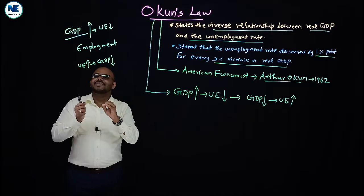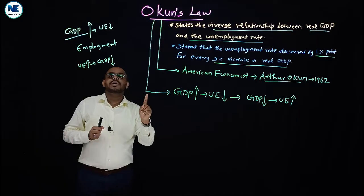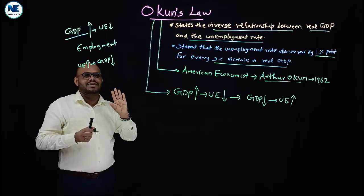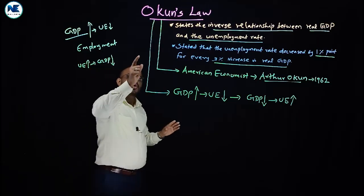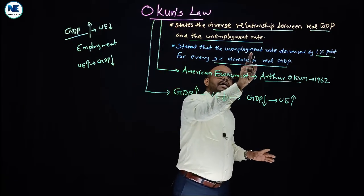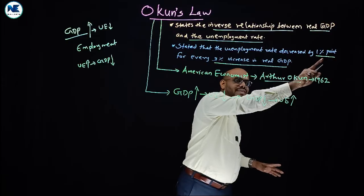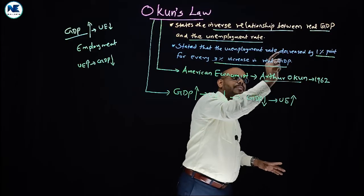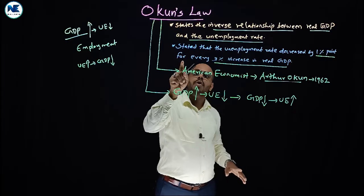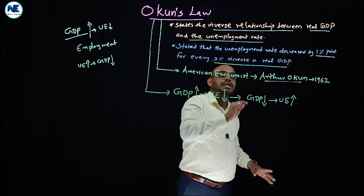Arthur Okun represented and stated that Okun's Law shows the unemployment rate decreased by one percentage point for every three percentage increase in real GDP.